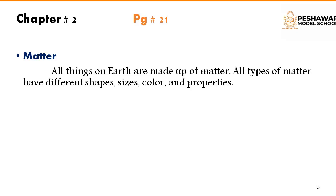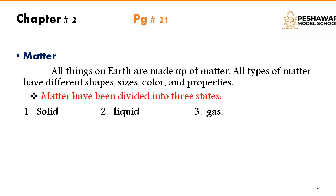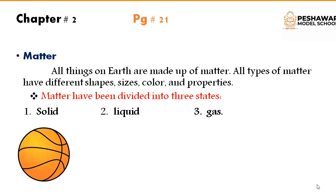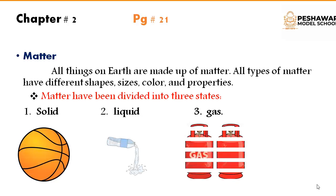Now, what is matter? Everything in the universe or earth is made up of matter. All types of matter have different shapes, sizes, color and properties. Matter has been divided into three states: solid, liquid, and gas.